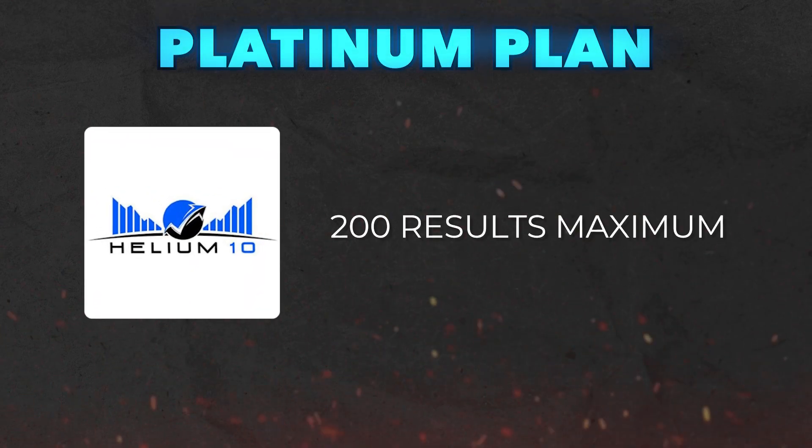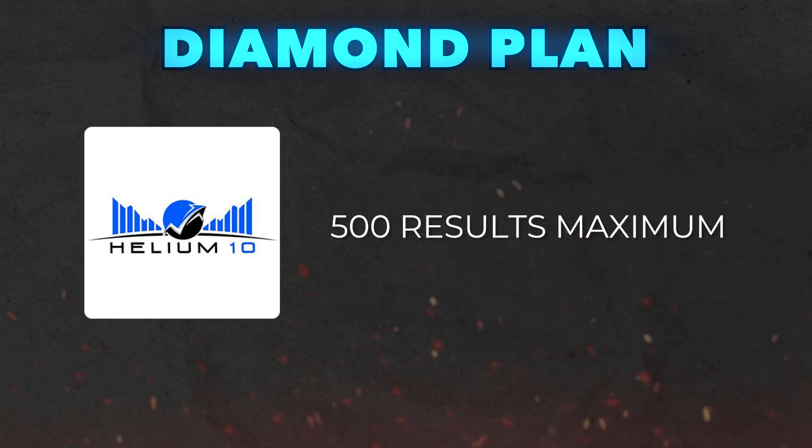Here the tool has given me over 500 results, which goes back to what I was saying about selecting a subcategory instead of a category. On the Platinum plan the tool shows a maximum of 200 results, and on the Diamond plan it shows a maximum of 500 results. So if your results exceed that maximum, you're only seeing the first 500 and missing thousands of others. To see all results you need to be more specific with your subcategory.